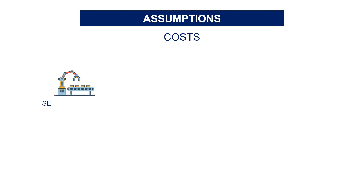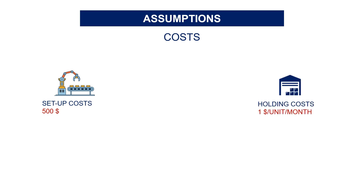And there is an algorithm for this. Let's set the assumptions. You need to pay $500 for each production line setup. Your holding costs are $1 per month for each unit. Take note that if your item is delivered in the same month, you do not pay the holding cost. And your production costs — variable — are $1 per unit.